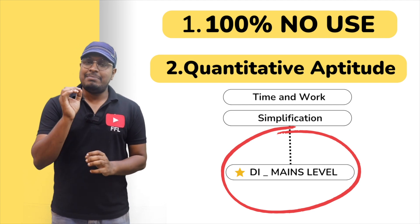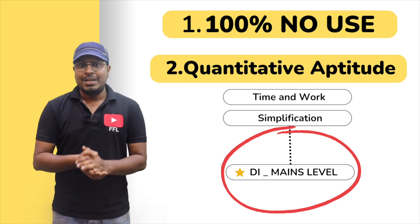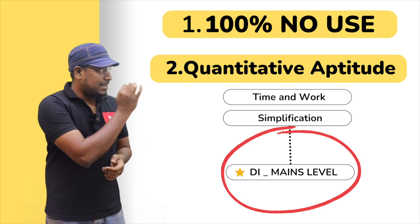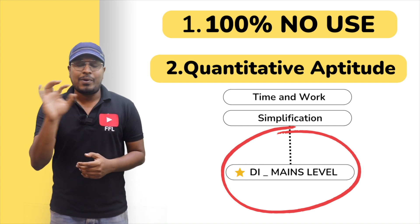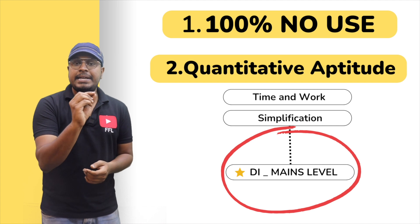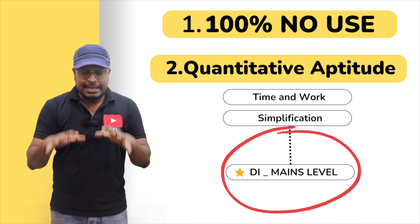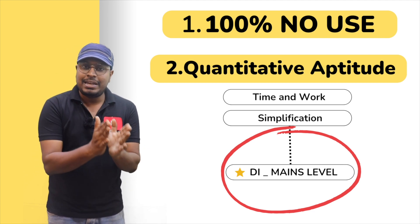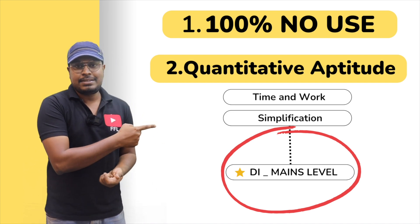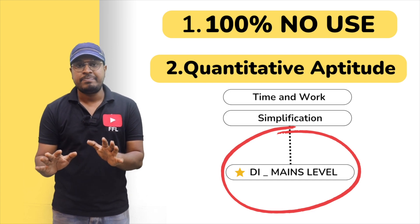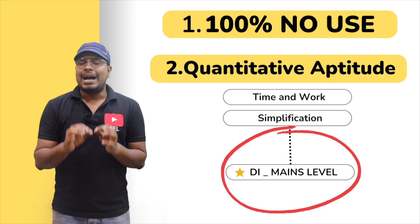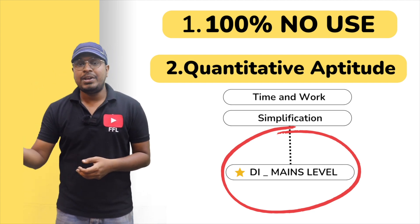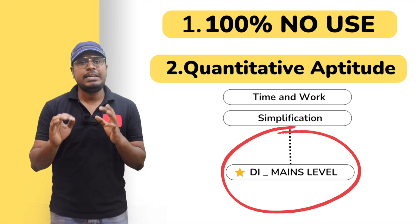Before watching this video, remember one important thing: the same data interpretation question I am going to teach is available as a test. First visit my website or mobile application — in the quantitative aptitude section, at the last, under data interpretation, the same question set is available as a test. First write the test, check your score whether you are getting 5 out of 5 or not. Without writing the test first, watching this video will be useless. So first write the test, analyze what mistakes you made, and then watch this video.